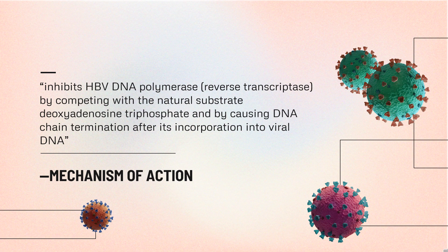Mechanism of Action: Adefovir dipivoxil is a prodrug of Adefovir. Adefovir is an acyclic nucleotide analog of adenosine monophosphate, which is phosphorylated to the active metabolite Adefovir diphosphate by cellular kinases. Adefovir diphosphate inhibits HBV DNA polymerase and reverse transcriptase by competing with the natural substrate deoxyadenosine triphosphate and by causing DNA chain termination after its incorporation into viral DNA. The inhibition constant (Ki) for Adefovir diphosphate for HBV DNA polymerase was 0.1 µM.